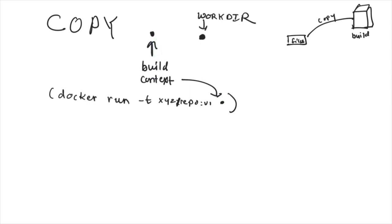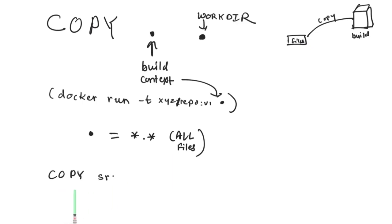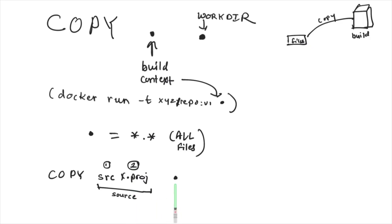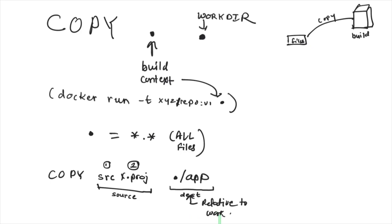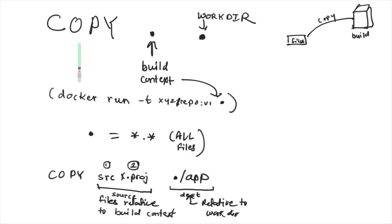The build context is whatever path you define at the end of the docker build command. When you use dot as the source, it considers all files. However, you can also provide a relative path and copy selective files — for example, a src directory and an x.csproj file. You can define multiple files as the source and also define a destination as a relative path to the WORKDIR, such as /app. Make sure you understand both build context and WORKDIR to understand how COPY works.